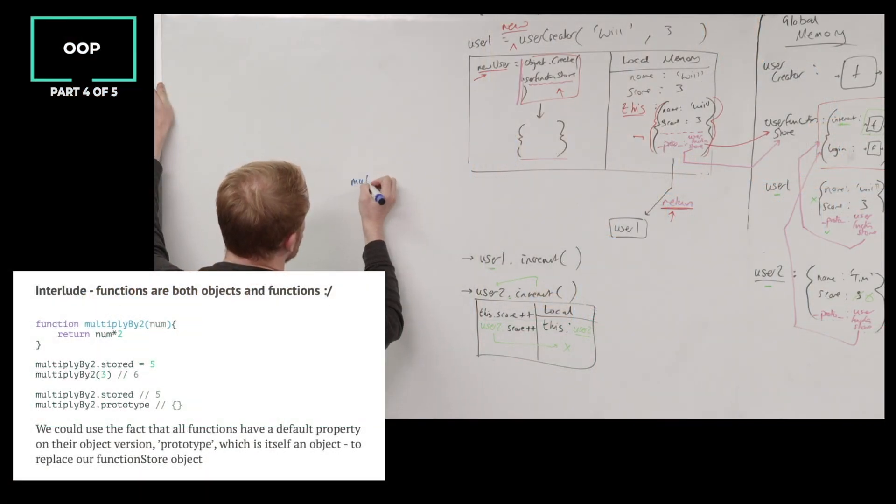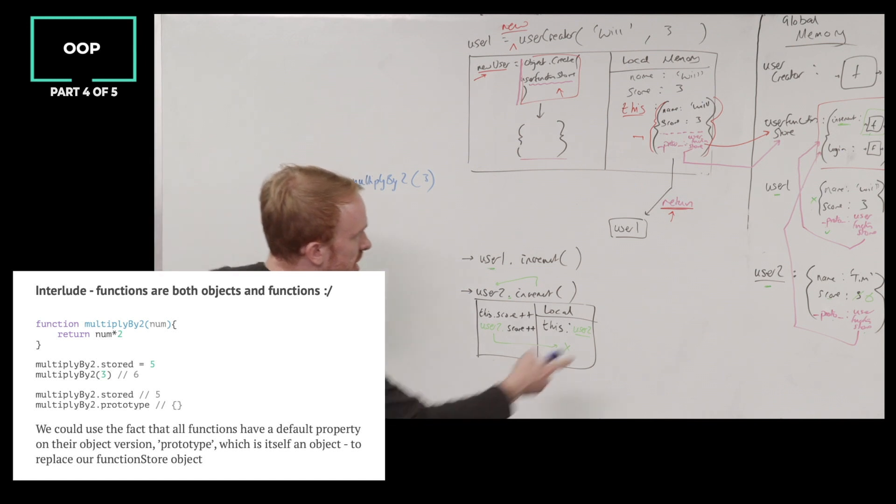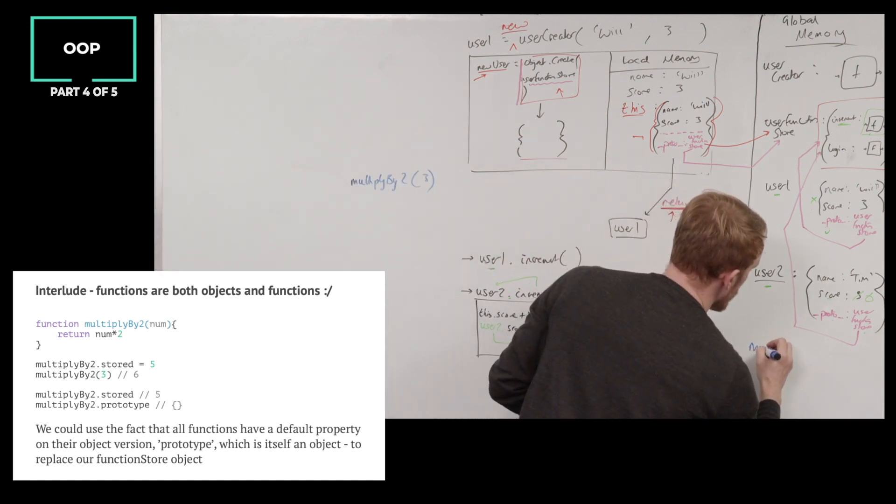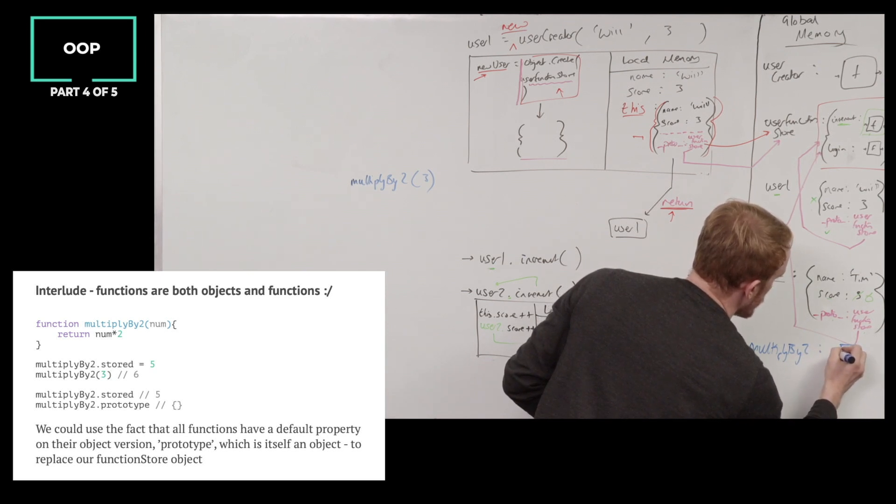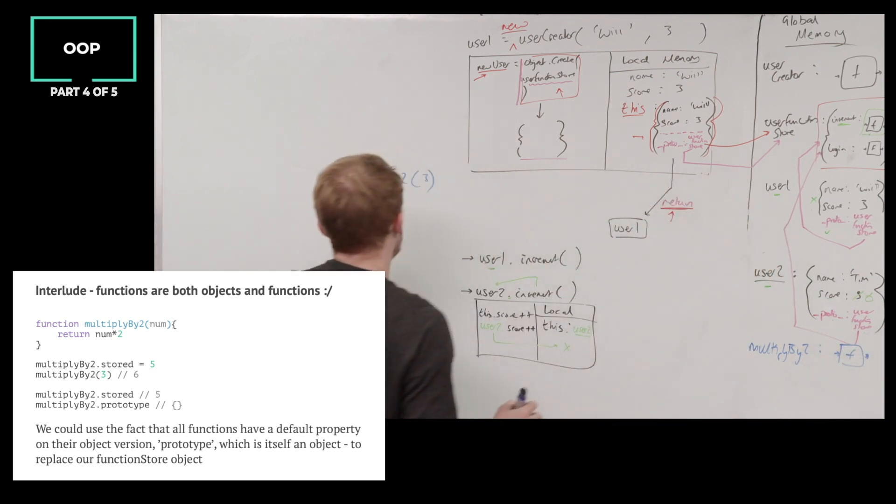I declare multiply by 2, and then I call it. Let's just declare it over here. Declare multiply by 2 as a function, right, you know this stuff. Call it like this.